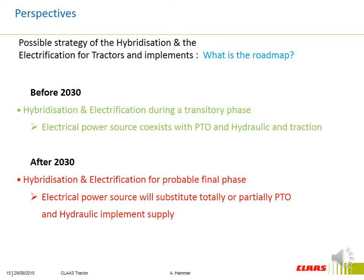Now, what is the roadmap? We can imagine two steps. The first one is before 2013 — it is the transitory phase. Electrical power source coexists with power takeoff, hydraulic, and traction. The second phase will probably be the final one, where electrical power will substitute totally or partially power takeoff and hydraulic implement supply. In reality, several variables can influence positively or negatively the evolution of the penetration and diffusion of hybrid and high voltage electrical systems in the market.